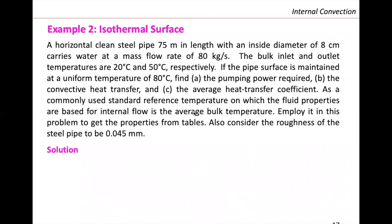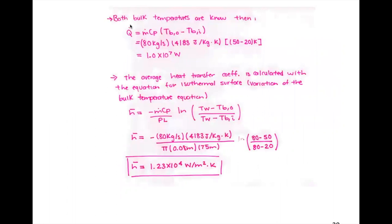We already solved half of this problem — we just got the pumping power. Now we need to get the convective heat transfer coefficient and the average heat transfer coefficient for this isothermal surface. It's very important to realize at this point we have an isothermal surface and we have three temperatures given: the wall temperature, T-bulk-in, and T-bulk-out. That means we can use the equation for an isothermal surface to calculate the H value.